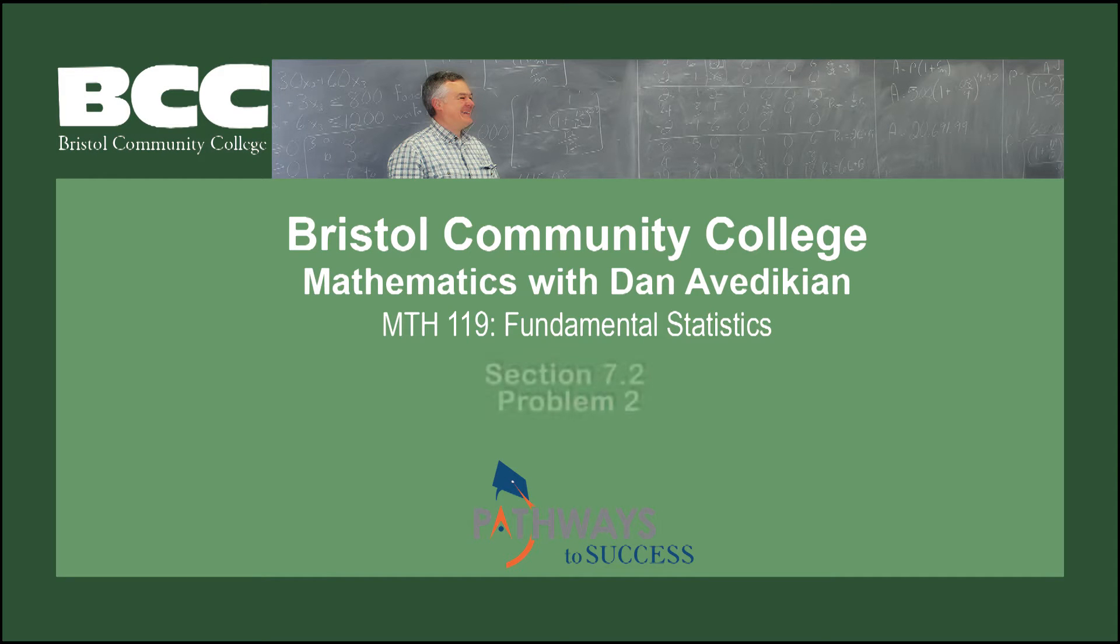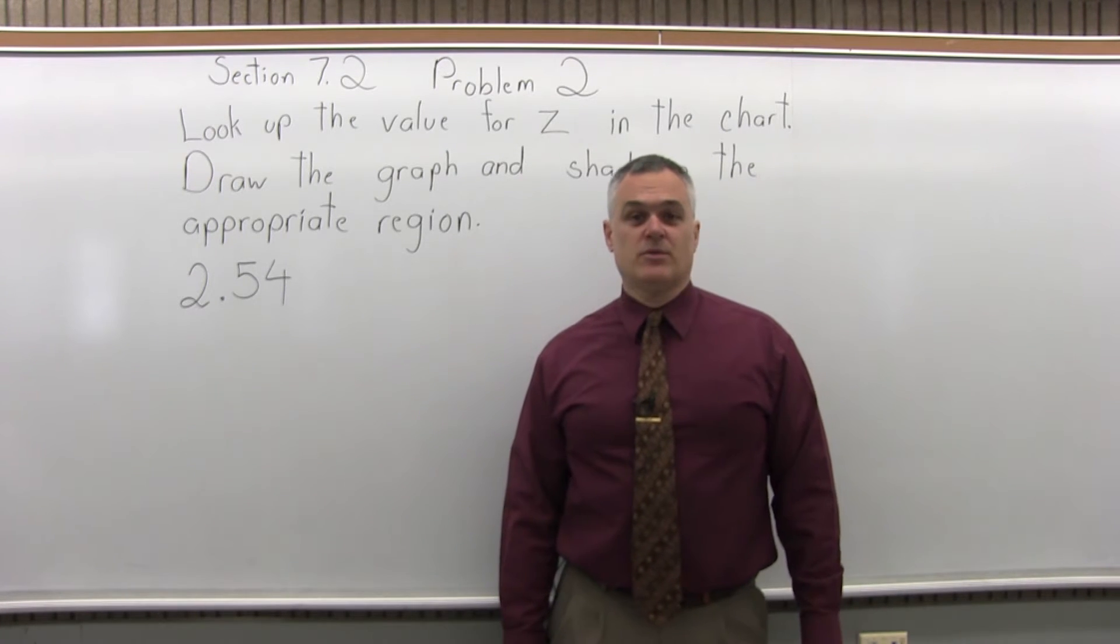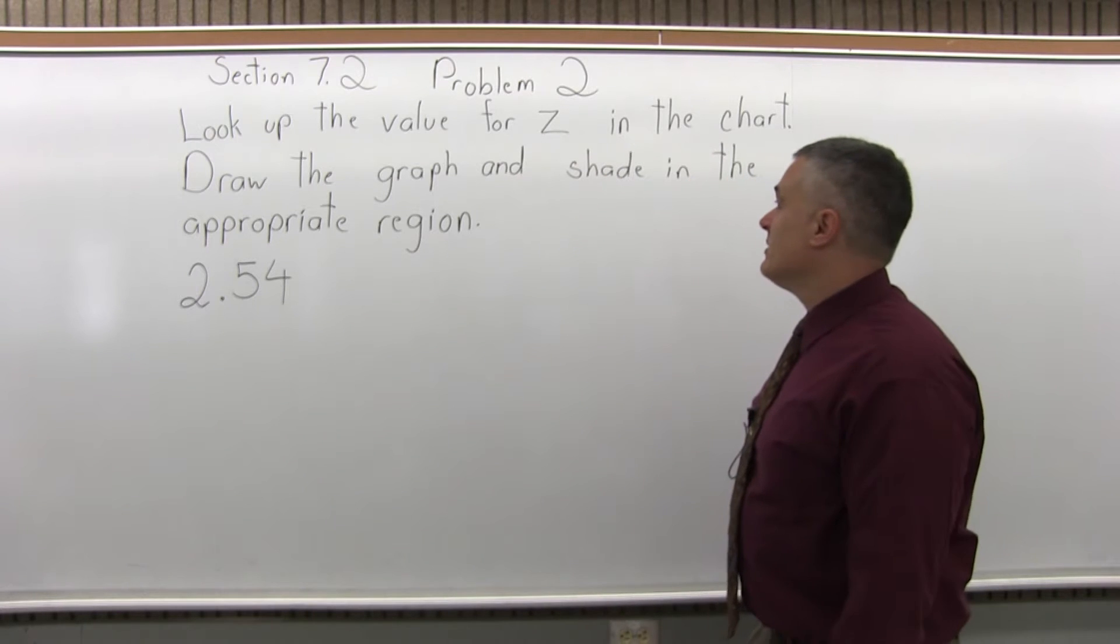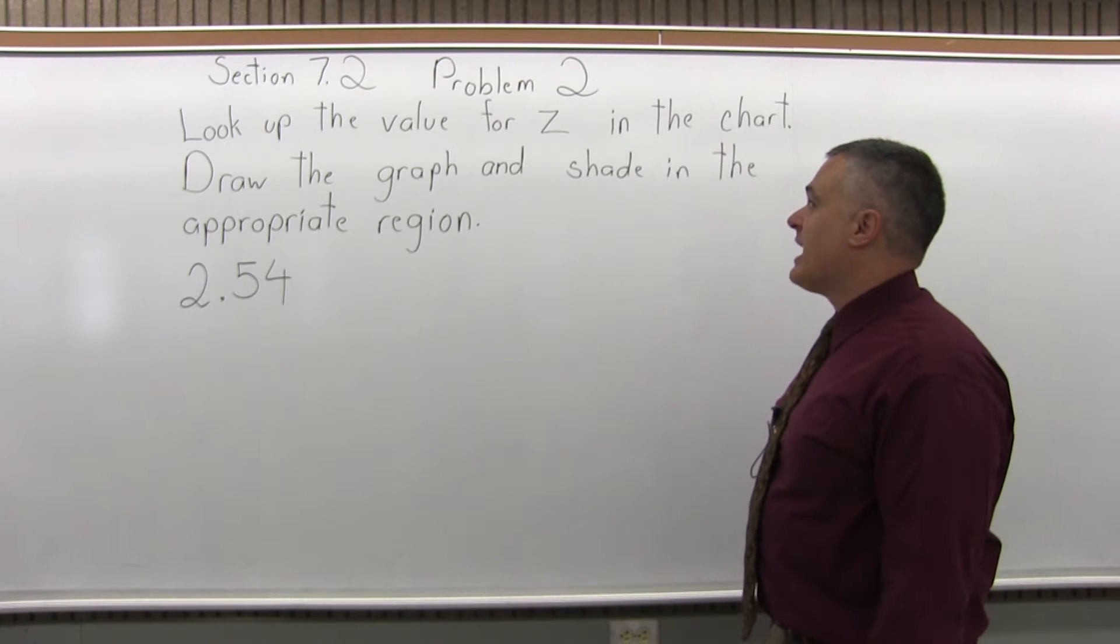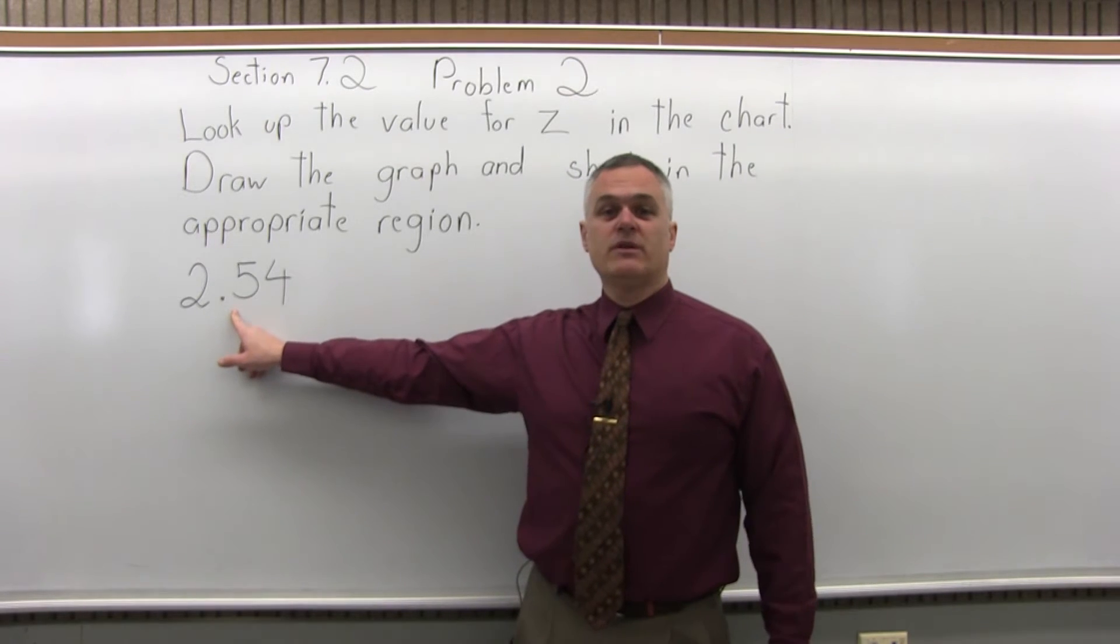Bristol Community College, Mathematics with Dan Avadikian, Math 119, Fundamental Statistics, Section 7.2, Problem 2. This is Section 7.2, Problem 2. It says, look up the value for z in the chart, draw the graph and shade in the appropriate region, and the z value is 2.54.